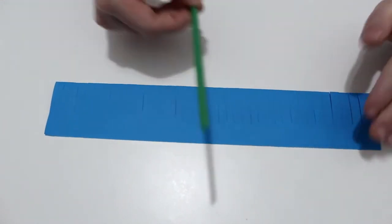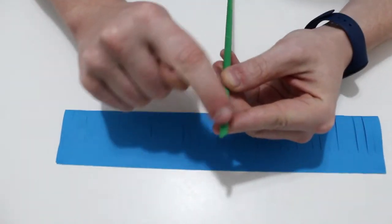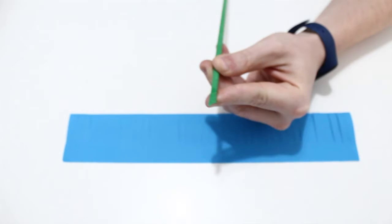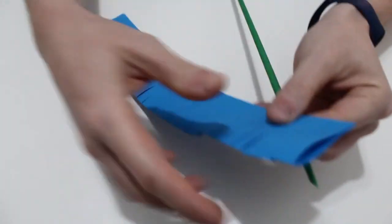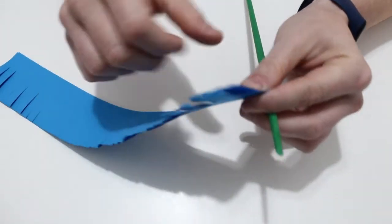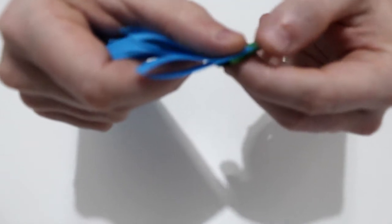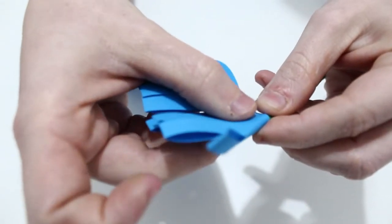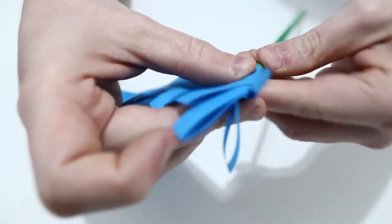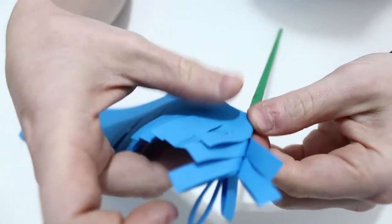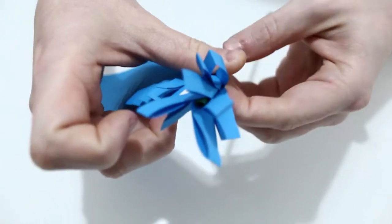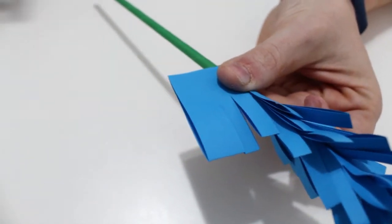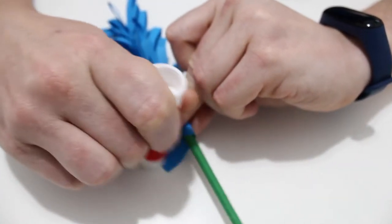Y ahora cogemos el tallo, vamos a ponerle un poquito de pegamento en una de las puntas. Vamos a coger la hoja con los cortecitos, y con los cortecitos hacia arriba, vamos a ir pegando la hoja de cortecitos en el tallo de forma de espiral.